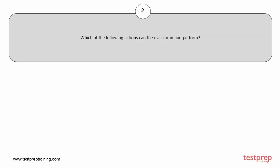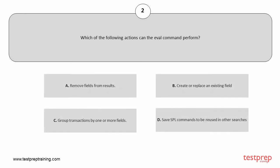Question number 2. Which of the following actions can the eval command perform? Your options are: A. Remove fields from results. B. Create or replace an existing field. C. Group transactions by one or more fields. D. Save SPL commands to be reused in other searches. The correct answer is option B.